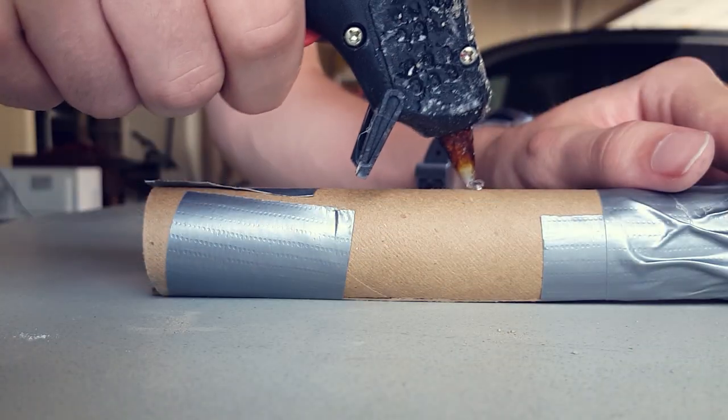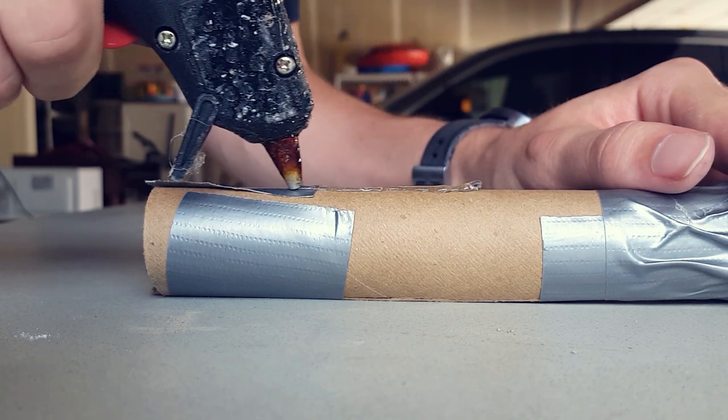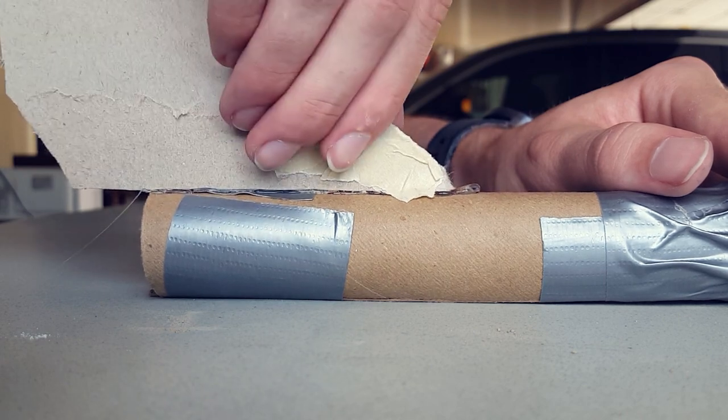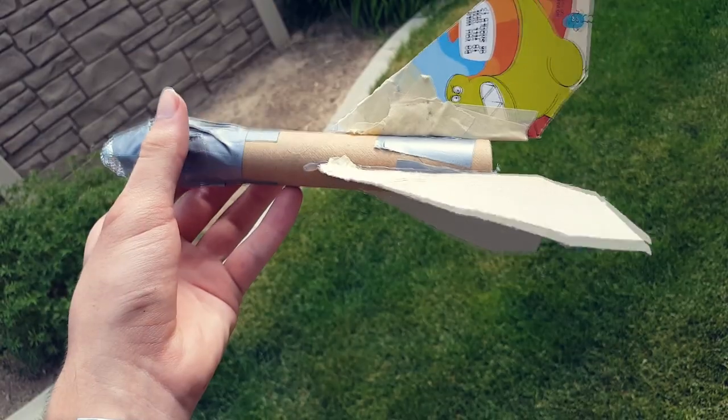The easiest way to attach the wings is by using hot glue, but it's also possible to use tape. Make sure they're on tight though, we've had plenty of rockets lose their wings on the way up. The end result should look something like this.